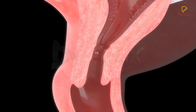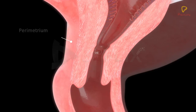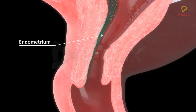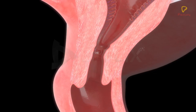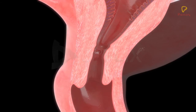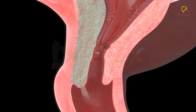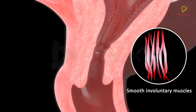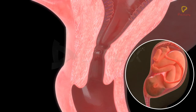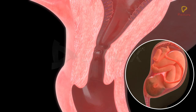The wall of the uterus has three layers: the perimetrium, myometrium, and endometrium. The perimetrium is the thin external membrane. The myometrium is the thick middle layer, made up of smooth involuntary muscles. The contraction of the uterine muscles aids in childbirth.